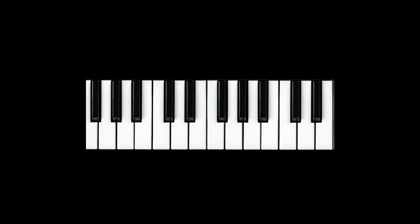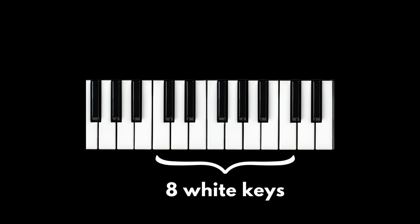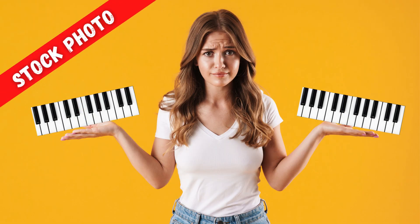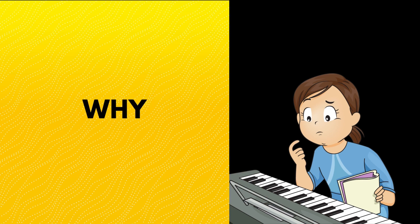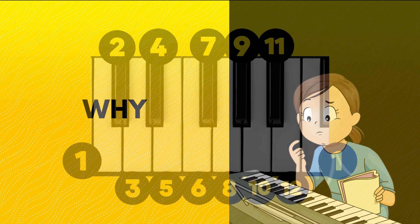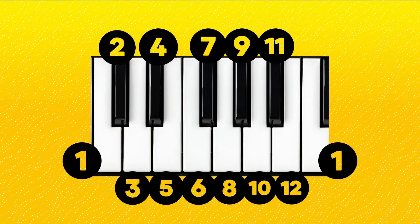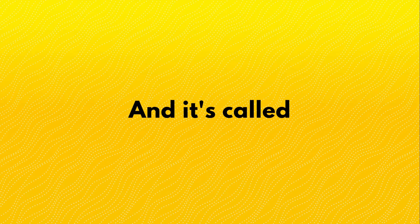We begin with the way in which the piano keyboard is laid out: eight white keys between octaves with black keys in groups of two and three. But why is the keyboard laid out this way? Well, the answer to that question is a bit convoluted, but there is a why behind why the piano has 12 piano keys between octaves, and it's called 12-tone equal temperament.